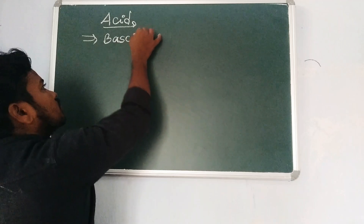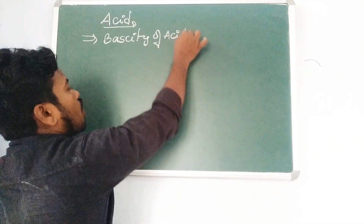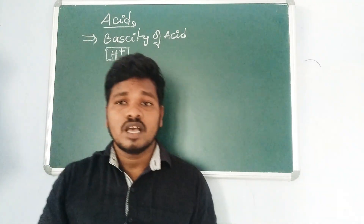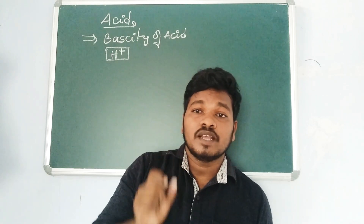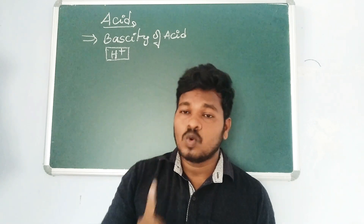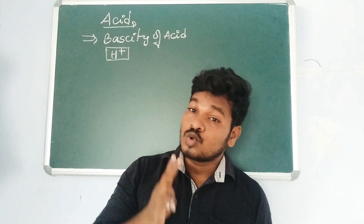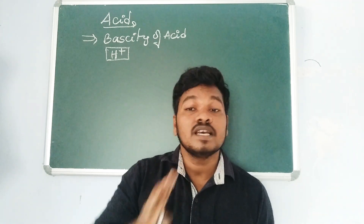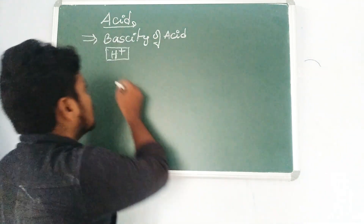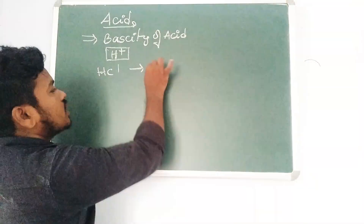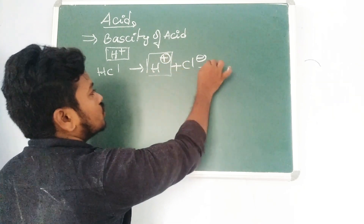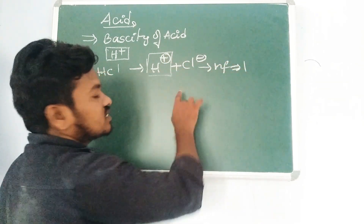For an acid, the n-factor is based on how many H⁺ ions it can furnish — that is, how many H⁺ ions can be replaced when it dissociates. If it can replace only one H⁺, n-factor is 1; if two, n-factor is 2; if three, n-factor is 3. For example, HCl dissociates as H⁺ + Cl⁻, giving only one H⁺, so the n-factor equals 1.